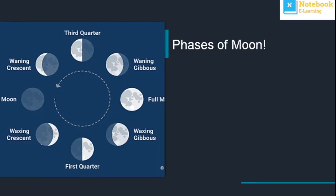When we see the moon, we see different faces of it. Sometimes the moon is not complete, and one day it appears completely full — that is called a full moon, which occurs once a month and is also called Purnima. On another night you cannot see it at all, and that is called a new moon, also called Amavasya.